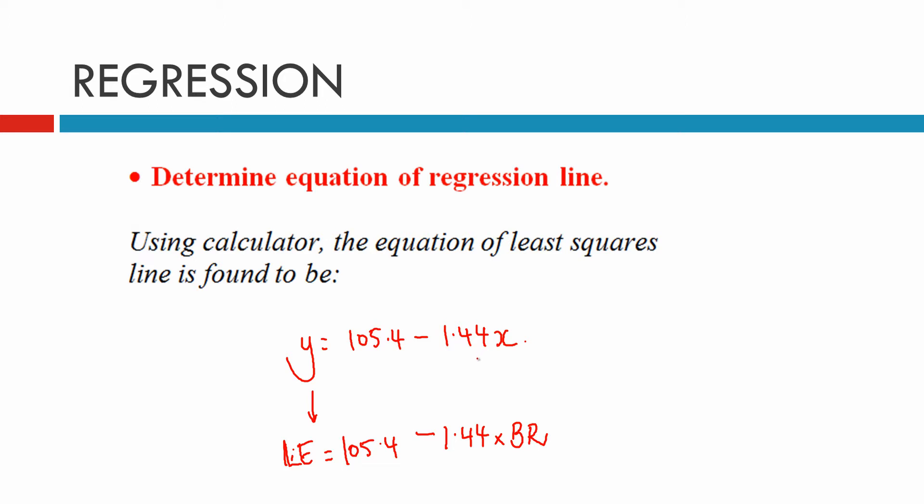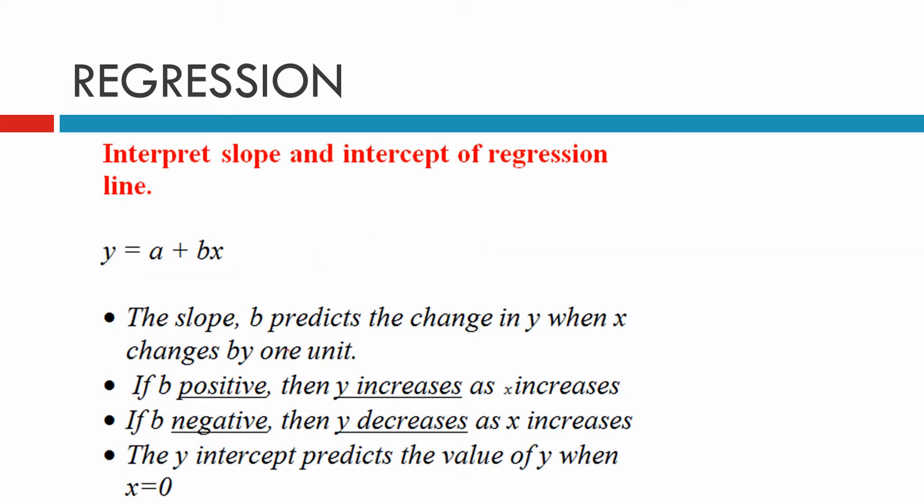Let's interpret the slope and intercept of this regression line. Just to give you a bit of information, normally y equals a plus bx, where b is the slope. The slope predicts the change in y when x changes by one unit. If b is positive, then y increases as x increases. That means as the x values are getting bigger, y will also get bigger. If b is negative, that means y decreases as x increases because we've got a negative gradient.